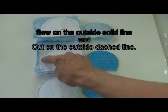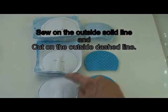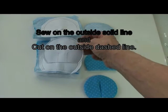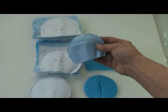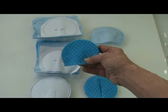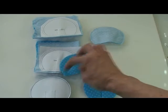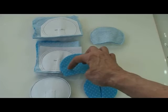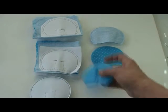Sew on the outside solid line then cut on the outside dash line. Remove the paper, turn it right side out and press it so that all of the rounded edges are well defined.